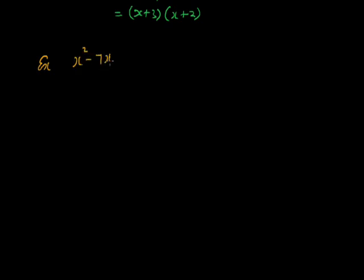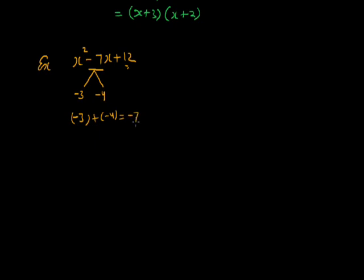Let's see some more examples. x squared minus 7x plus 12. Here the coefficient of x is minus 7, so we have to split into two numbers such that their sum is minus 7. The two numbers are minus 3 and minus 4, because the sum of minus 3 and minus 4 is minus 7. Their product, minus 3 into minus 4, equals the constant term, that is 12. So minus 3 plus minus 4 gives minus 7, and minus 3 into minus 4 gives plus 12.